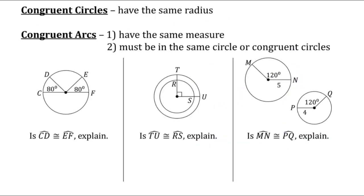Now let's discuss congruency. Congruent circles are circles that have the same radius. For congruent arcs, you need two things: first, they have to have the same measure, meaning the same central angle; and second, they must be either in the same circle or in congruent circles — that is, two circles that have the same radius.